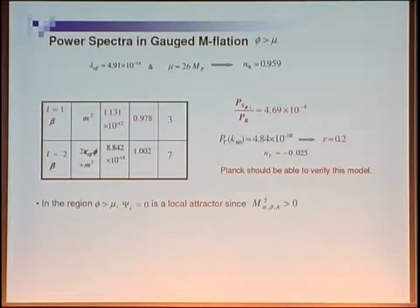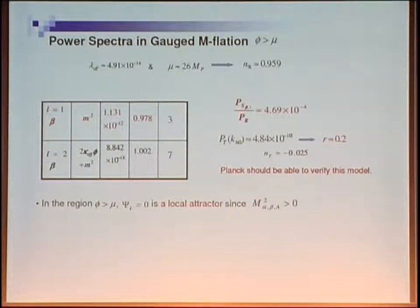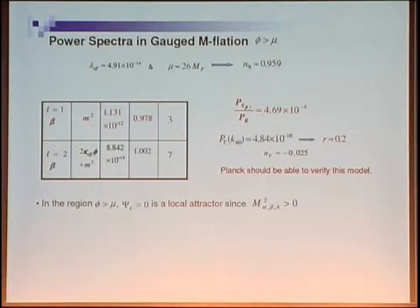There are three regions. In region A, phi bigger than mu, with lambda effective and mu tuned appropriately, the predicted spectral index n_s is about 0.96, which is close to what WMAP7 suggests. The lightest isocurvature mode is the L=1 beta mode, and the amplitude of isocurvature perturbations at horizon scales with respect to density perturbations is around 5×10^-4, and R is 0.2.